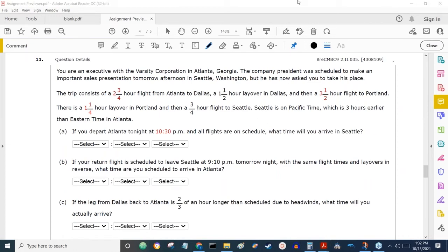Okay, question 11. You're an executive with the Varsity Corporation in Atlanta, Georgia. The company president was scheduled to make an important sales presentation tomorrow afternoon in Seattle, Washington, but he has now asked you to take his place.